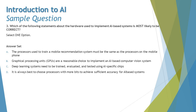Option B says graphical processing units (GPUs) are a reasonable choice to implement an AI computer vision system. GPUs are designed for parallel processing of images using thousands of cores, which is close to what is required for an AI-based computer vision system, and this would most likely be implemented as a neural network. This looks like the best answer so far.